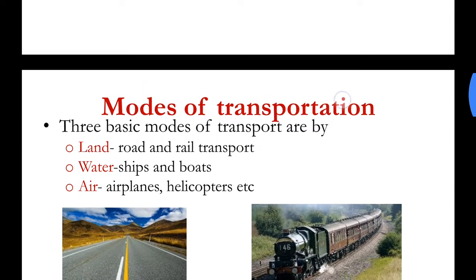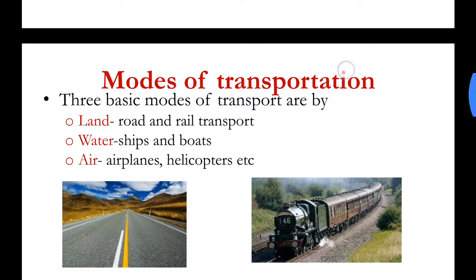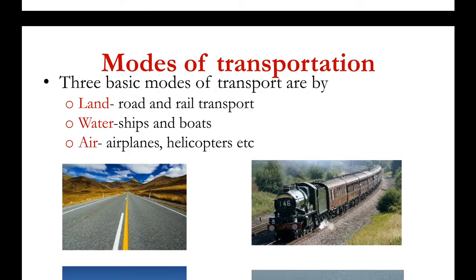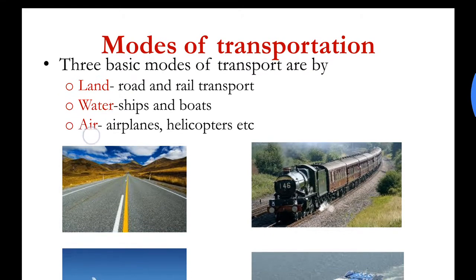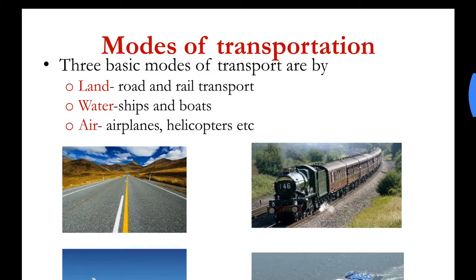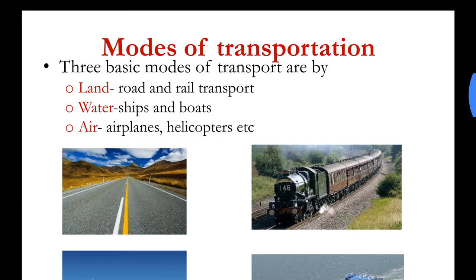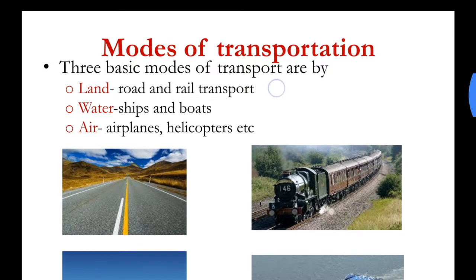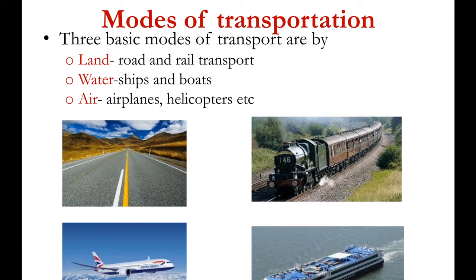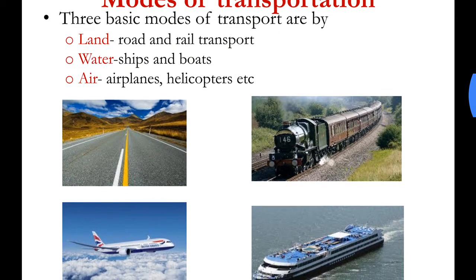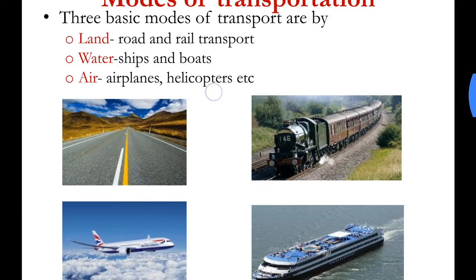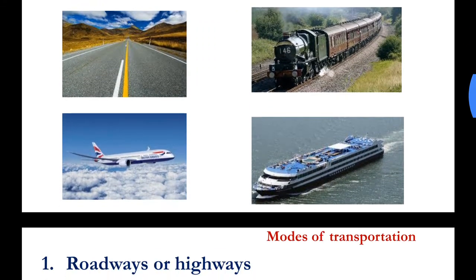Let us now discuss the modes of transportation. Basically there are three media through which we can transport or move from one point to another: land, water, and air. On land we have transport systems such as road and railways. On water we have ships and boats. On or through air we have aeroplanes and helicopters.